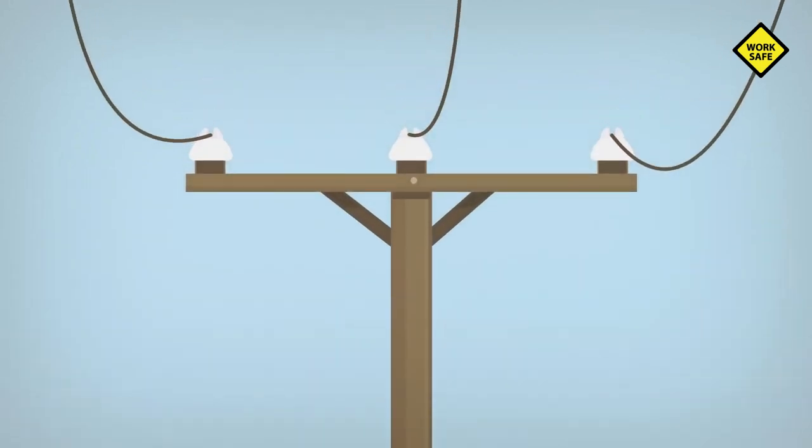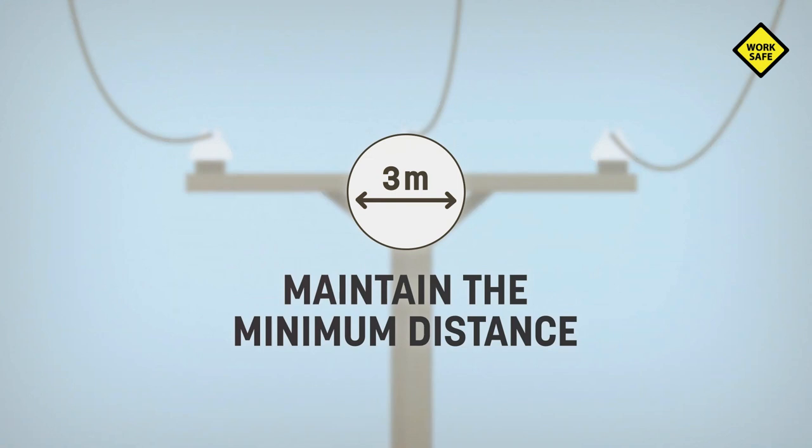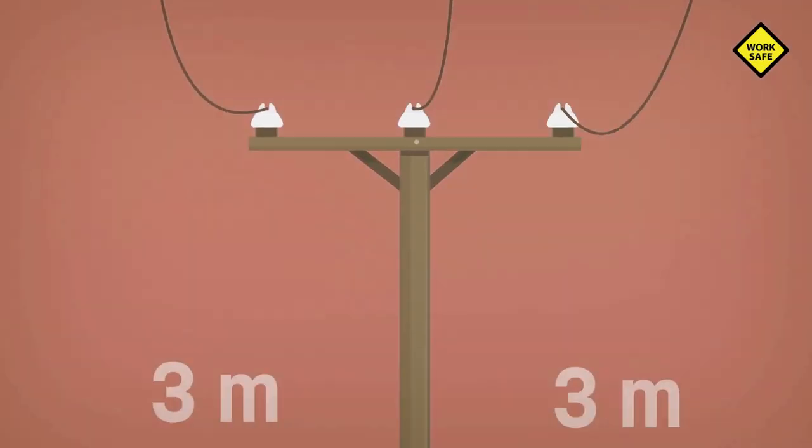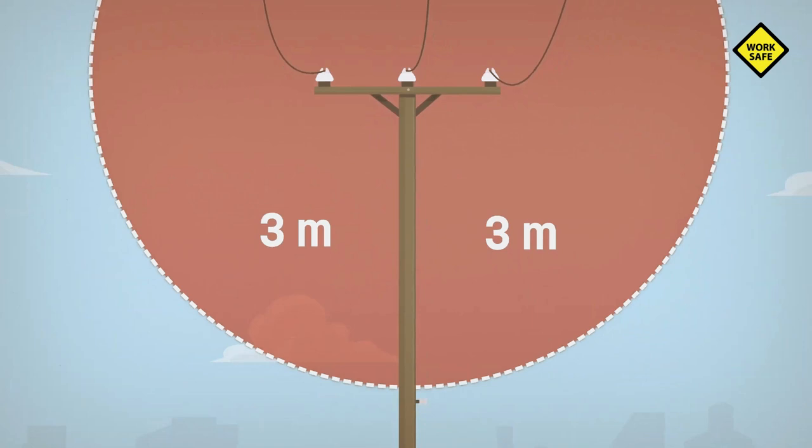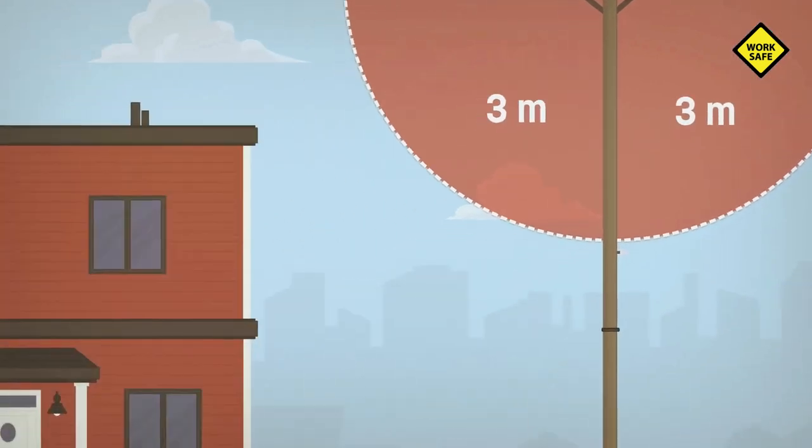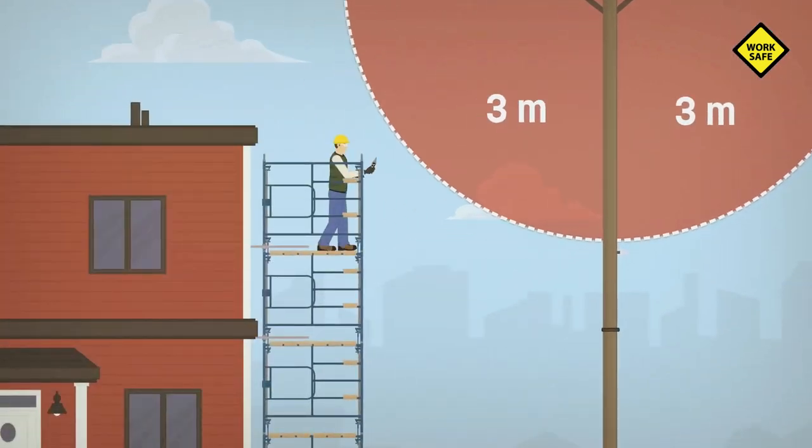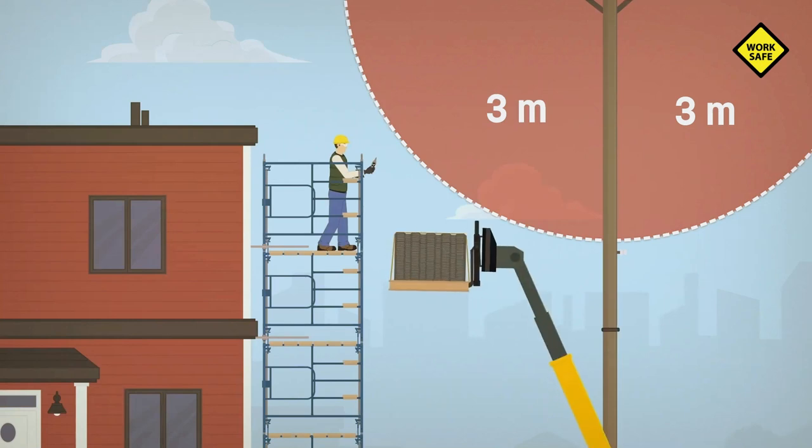Once you've located the medium voltage lines, you need to figure out if it's possible to maintain the minimum distance of 3 meters at all times. And the minimum distance isn't just for workers. It includes buildings, equipment, tools, materials, and machinery.